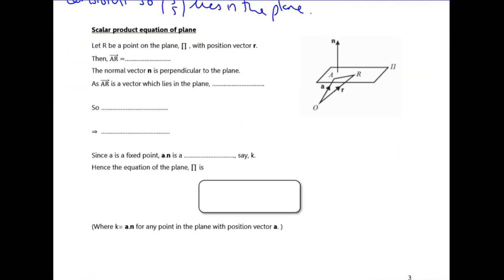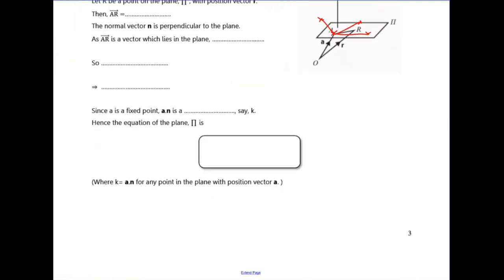The next equation of a plane is the one used most commonly. I'll sort of justify where it comes from, but ultimately you just need to learn the formula. Suppose you've got a plane and a starting point A on the plane. Any direction vector that lies in the plane is perpendicular to the normal vector. The normal vector is perpendicular to the plane, so any vector from A to another point in the plane will be perpendicular to it.